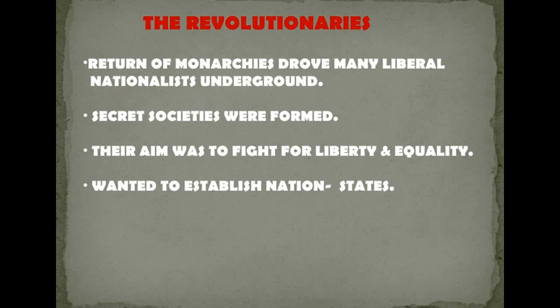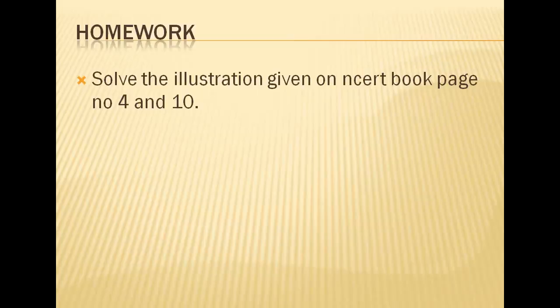There are certain more things that happened in these series that we will discuss in future lectures. So this is all for this particular lecture. Till now we have discussed about two to three series — basically how it came up and how the revolutionary thought came up. In future lectures we will discuss the other series. The homework for today is to look at the illustrations in the NCERT book, page number 4 and 10. If you have any queries you can ask in the comment section or the student inquiry section. Thank you.